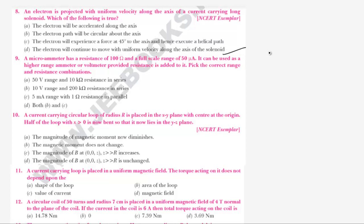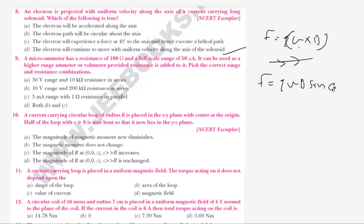Because of the magnetic Lorentz force, we know that F equals q into v cross B. It is given that the electron is projected uniformly along the axis of the current carrying solenoid, so velocity is acting in the same direction as the field. The force equals QVB sin theta, and since theta equals 0, sin 0 is 0, so the force acting is equal to 0.